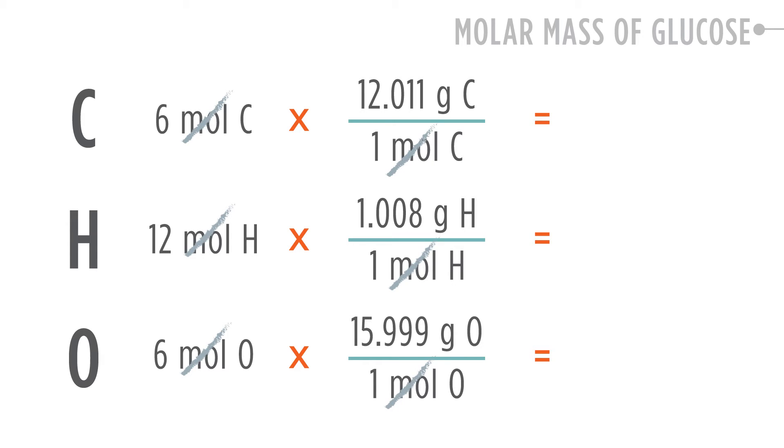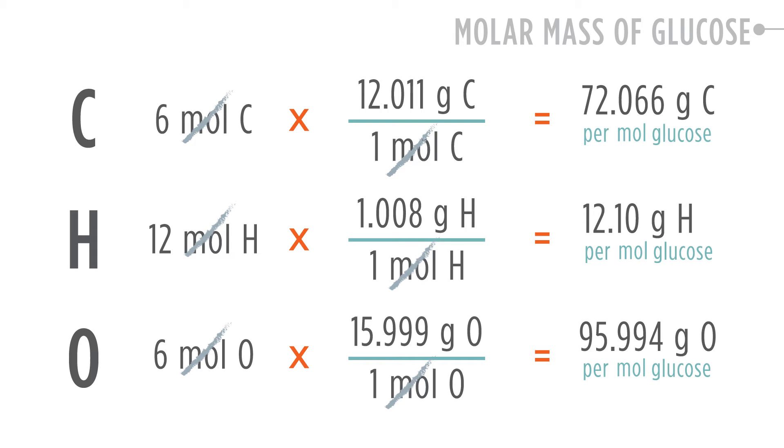The moles cancel out, giving us 72.066 grams of carbon per mole of glucose, 12.096 grams of hydrogen per mole of glucose, and 95.994 grams of oxygen per mole of glucose.